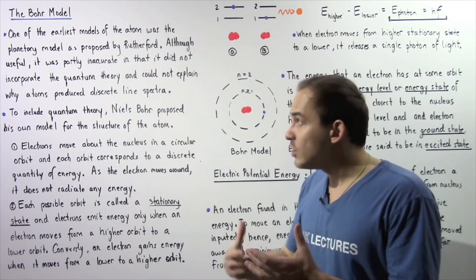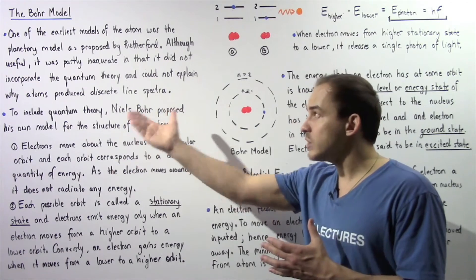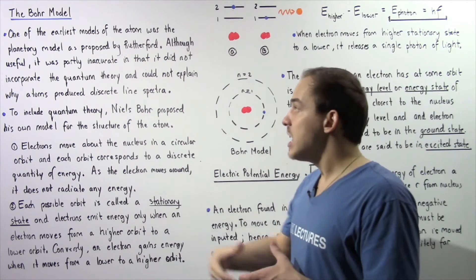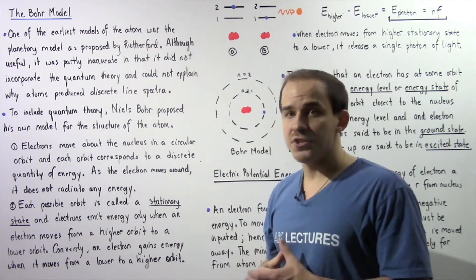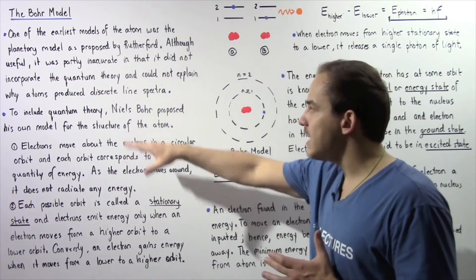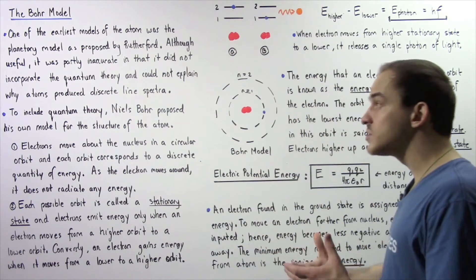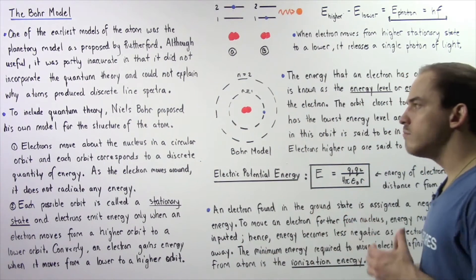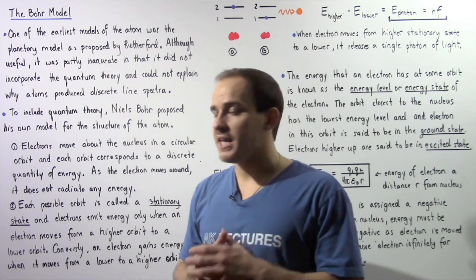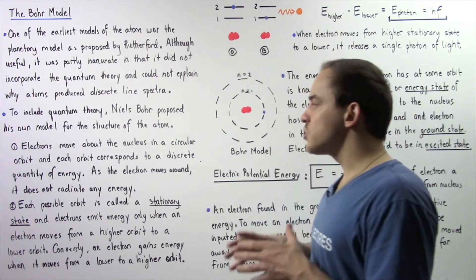To explain why atoms produce discrete line spectra and to incorporate the quantum theory of energy, a scientist by the name of Niels Bohr proposed his own model for the structure of the atom. This became known as the Bohr model.